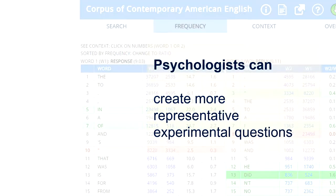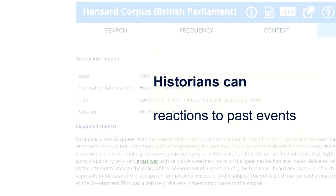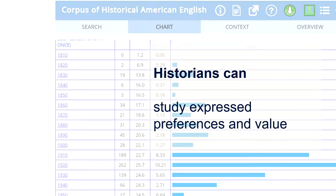Psychologists can also take advantage of a corpus, because they can use it to help them create more representative experimental questions. Historians can look at a corpus to see reactions to past events through different periods of time, and they can also study how people have expressed their preferences and values in different periods.